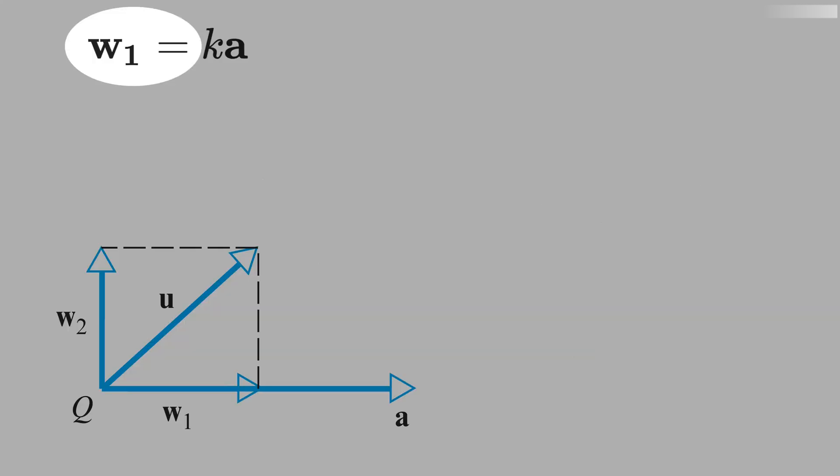Let's start the derivation of w1. See that you can write w1 as the scalar k times the vector a. See here that w1 has the same direction as vector a, it's just the magnitude that varies. That means the problem is to figure out what is the scalar k.